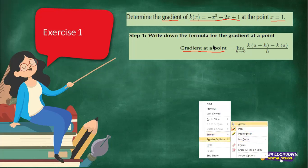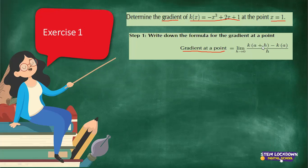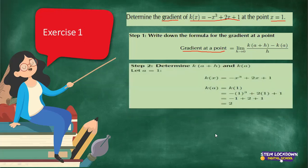After writing your formula, you need to identify what k(a+h) and k(a) are. This simply means that in the place of x, you're going to replace with a+h, and then continue. To determine k(a+h), remember that a represents the value of x, so we start by saying our a or our x is 1, and then we substitute that into the equation.